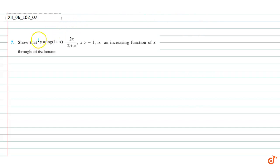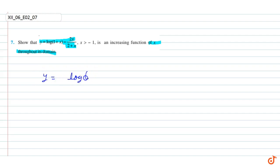In this question we have to show that the function y is an increasing function for all x throughout its domain. Our function y is equal to log of (1 + x) minus 2x upon (2 + x). We know that the log value can't be negative, so x is greater than minus 1. And x does not equal minus 2 because x is already greater than minus 1.